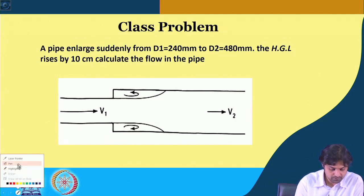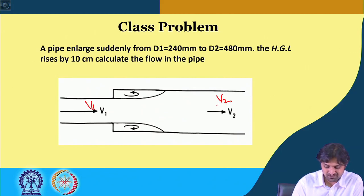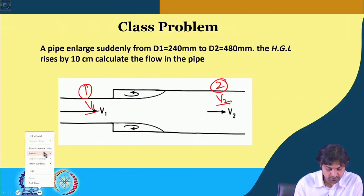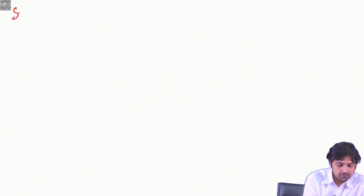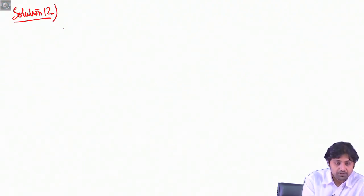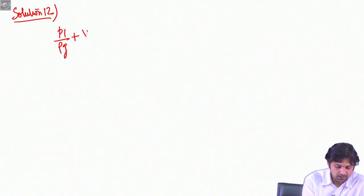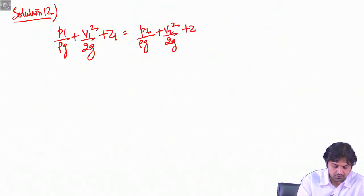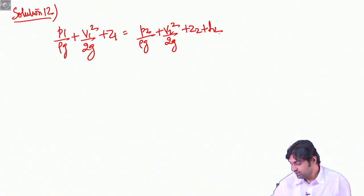Section 1 has velocity V1 and section 2 has velocity V2. We write Bernoulli's equation: P1/ρg + V1²/2g + Z1 = P2/ρg + V2²/2g + Z2 + head loss.